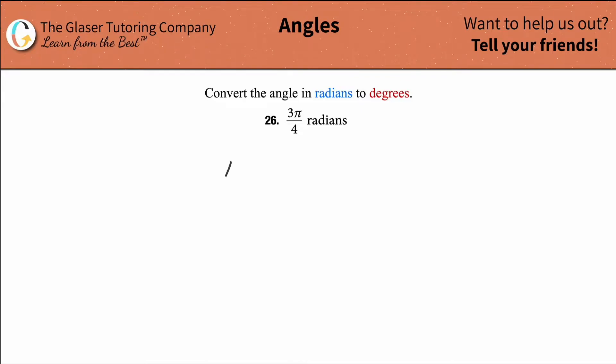Well, we want to remember that there are pi radians in or equivalent to 180 degrees. In other words, 3.14 radians is equivalent to 180 degrees.